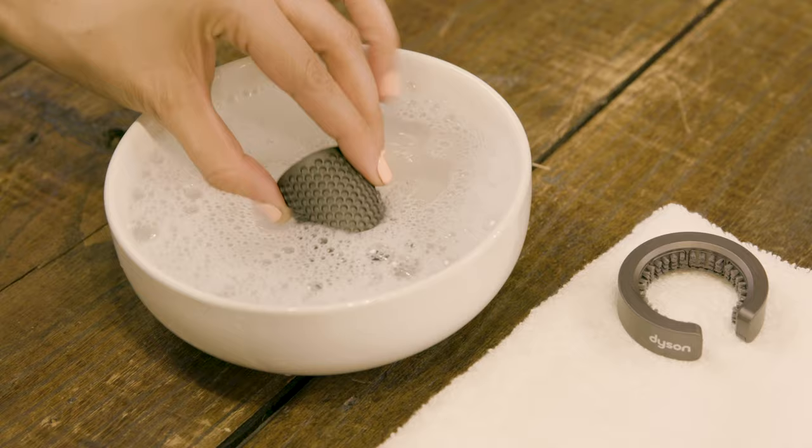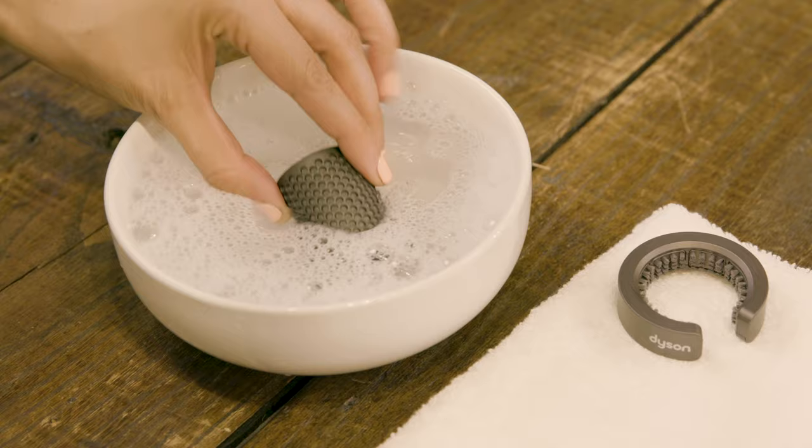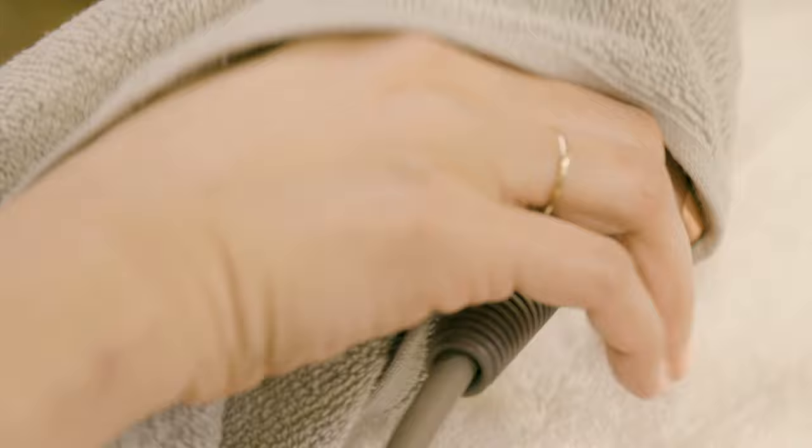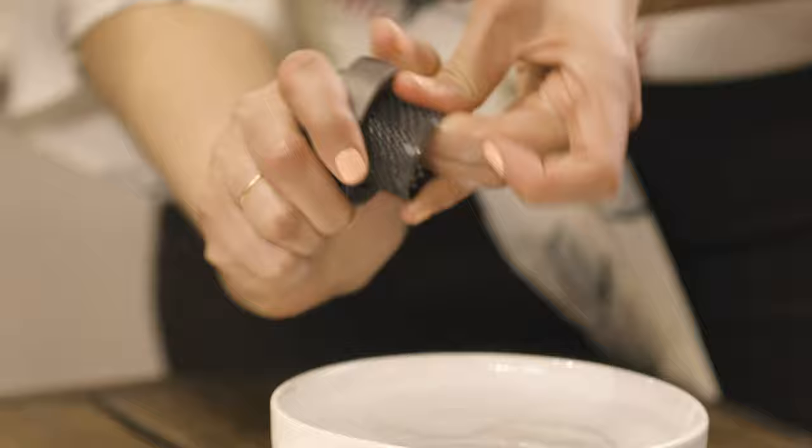When you're ready to clean the filter cage, put the cage in dish soap and warm water for at least 30 minutes and wipe down the filter with a clean dry cloth. Then grab the cleaning brush that was also included and brush the filter cage vigorously.